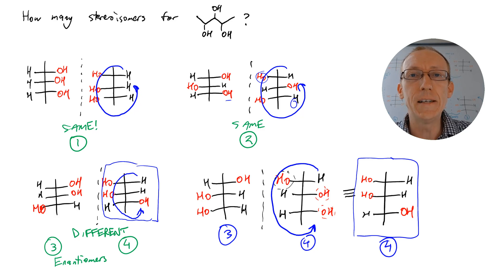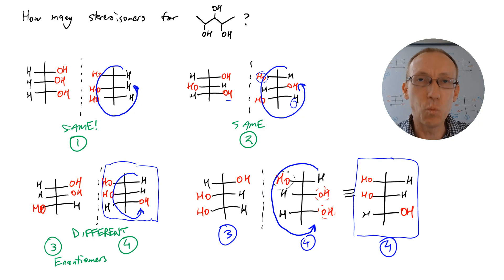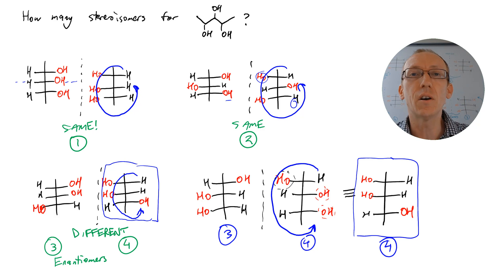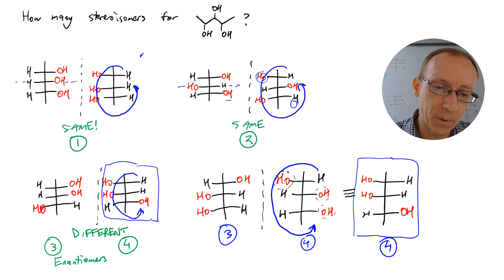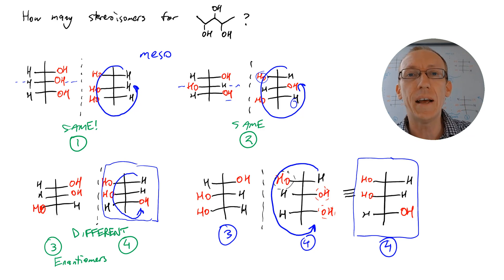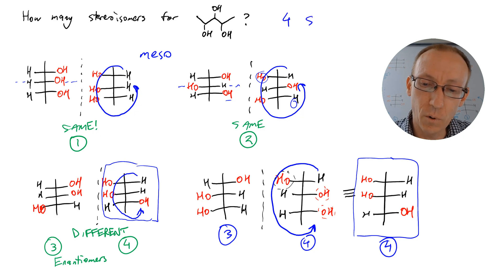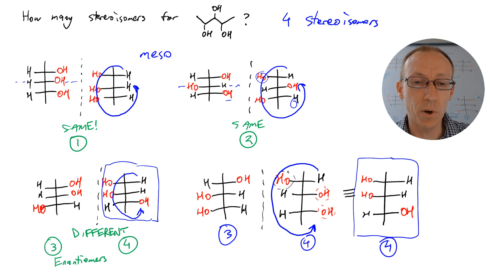So overall there are only four different possible stereoisomers for this compound. There are these two mirror image enantiomeric compounds, three and four, and then there's one and two that are different three-dimensional arrangements of the atoms. They're not mirror images of each other and they're not mirror images of three and four, so they must be diastereomers. And those particular compounds have a mirror plane within the molecule, so they're not chiral — the term we use for that is meso. So this compound has two meso stereoisomers and two enantiomeric stereoisomers, giving four compounds in total. Hopefully that helps with working out the number of stereoisomers for a compound like this one.